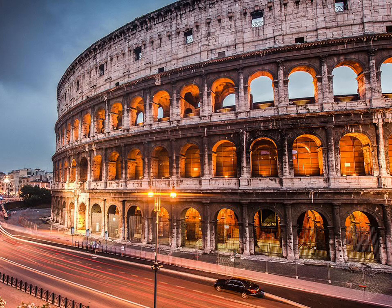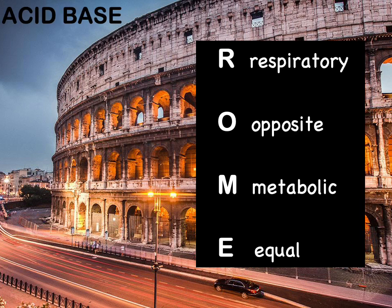This is a stunning photo of the Colosseum in Rome, included as a memory aid for acid base. The acid base mnemonic ROME — respiratory opposite, metabolic equal — is one of the things you can use to point towards what is the primary disorder in acid base.